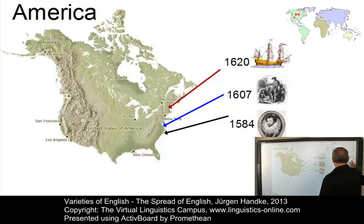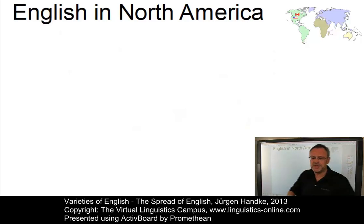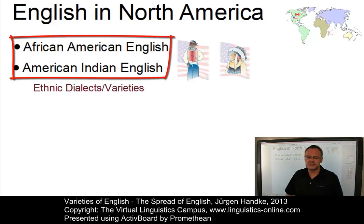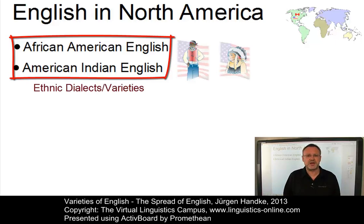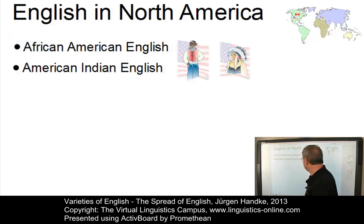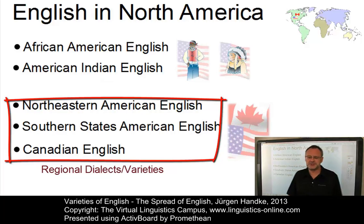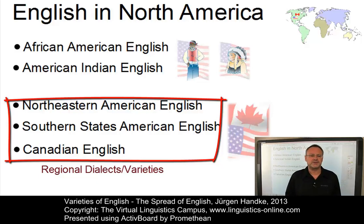Today we can identify the following major dialects in North America: ethnic varieties such as African American English — some people prefer the term African American Vernacular English — and American Indian English. Or regional varieties such as North Eastern American English, Southern States American English, or Canadian English.